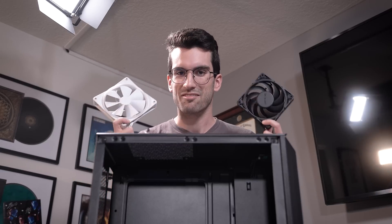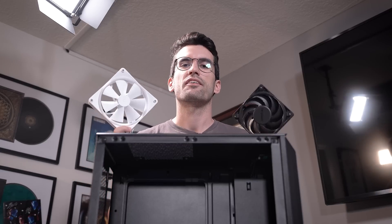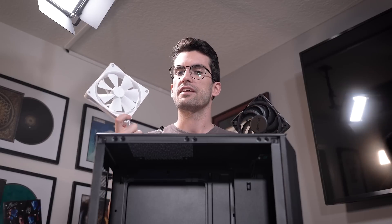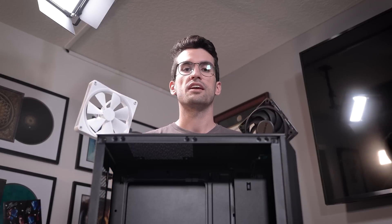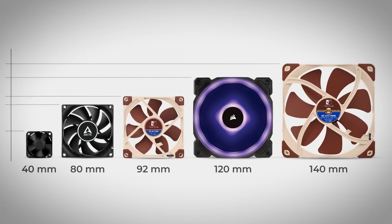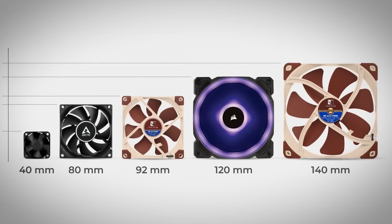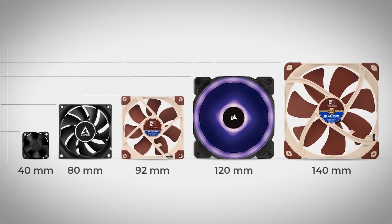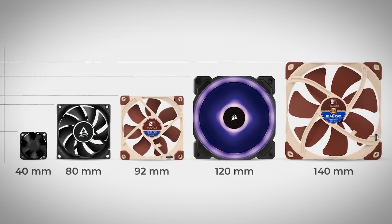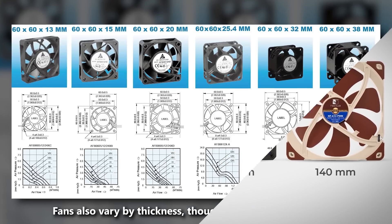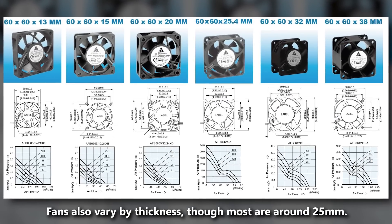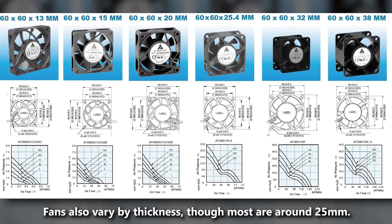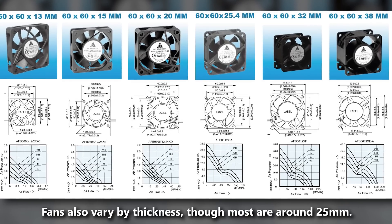Let's kick things off with what I believe to be the most important difference between PC fans: their sizes. I have a 140mm fan here and a 120mm here, and these are the two most common sizes you'll see. Even when shopping for AIOs or just generic CPU air tower coolers, they'll likely be paired with either a 120 or a 140. This is an important distinction because some cases only support 120s, and some support up to 140s.